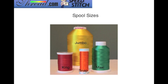Sulky threads are available in a variety of sizes: the Jumbo Spool, the Maxi, the King, and the Snap Size Spool. I can't tell you exactly how many yards are on each of these because it really depends on the weight of the thread.